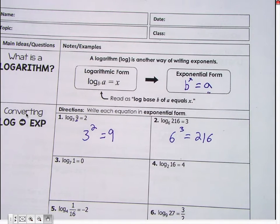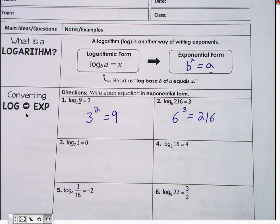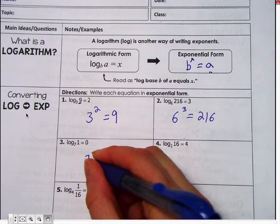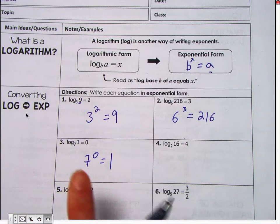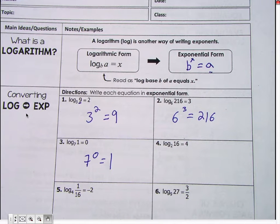Okay. Number three. Who wants to try it? Go ahead. Seven to the zero. And this is true. Anything taken to the zero power will give you one.